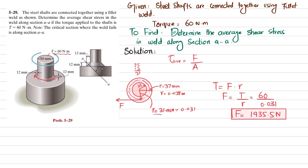The shear area is equal to 2πr, the circumference, multiplied by the thickness along section AA. Looking at the geometry, this is a right-angle triangle where this leg is 12 millimeters and this leg is also 12 millimeters, and this is the section AA line.